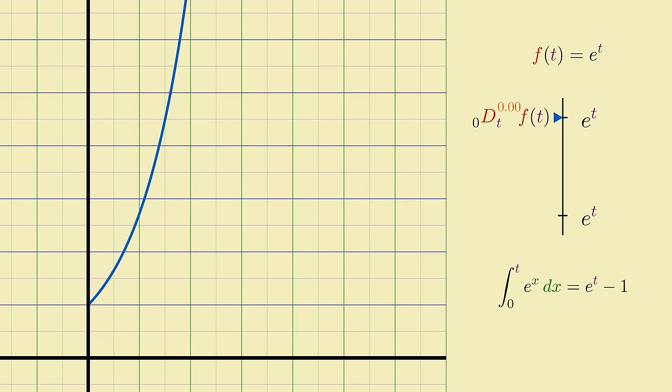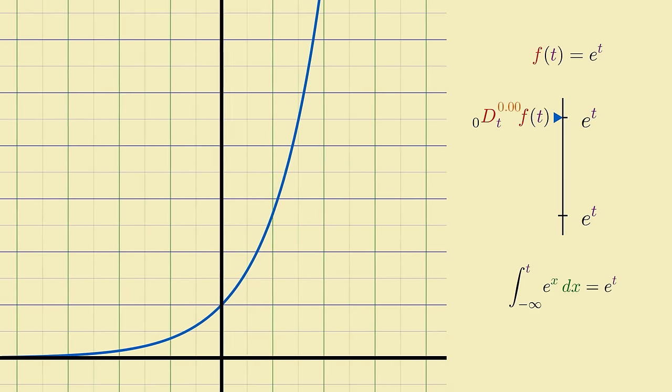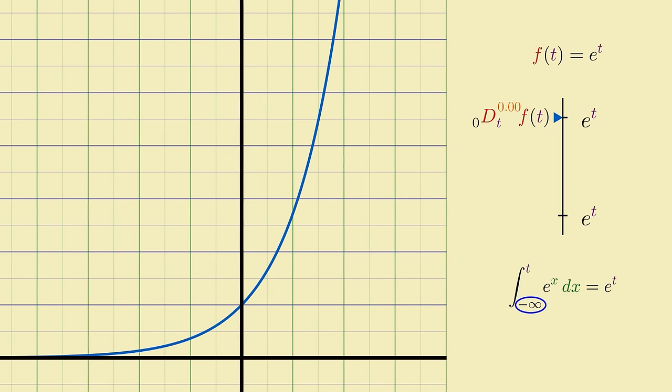So to make the integrals of e to the x behave more stably, we should pick the lower bound to be negative infinity. Then the integral of e to the x will truly be just a copy of itself, just with x renamed to t, and likewise for all the higher order integrals. And so similarly, if we change the lower bound of our fractional derivative formula to negative infinity, the weird intermediate functions return to being just copies of the original e to the t.